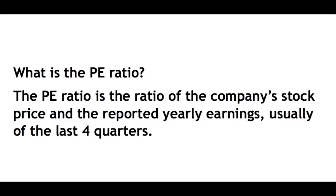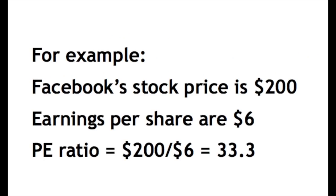So let's start with what is a price-earnings ratio. The price-earnings ratio is the ratio of the company's stock price and the reported yearly earnings, usually of the last four quarters — the trailing price-earnings ratio. For example, Facebook stock price is $200, earnings per share are $6, so the price-earnings ratio is 200 divided by 6, which is 43.3.